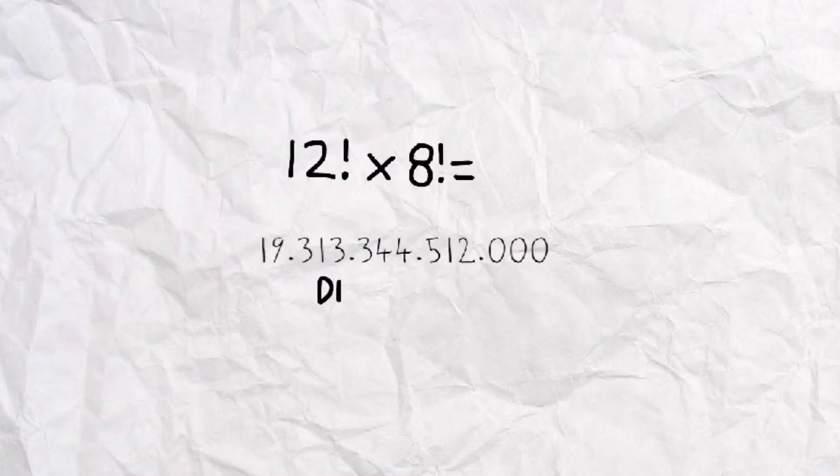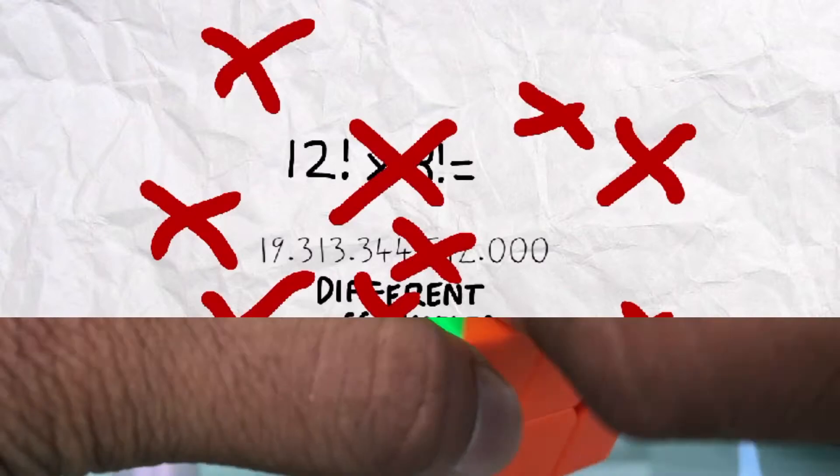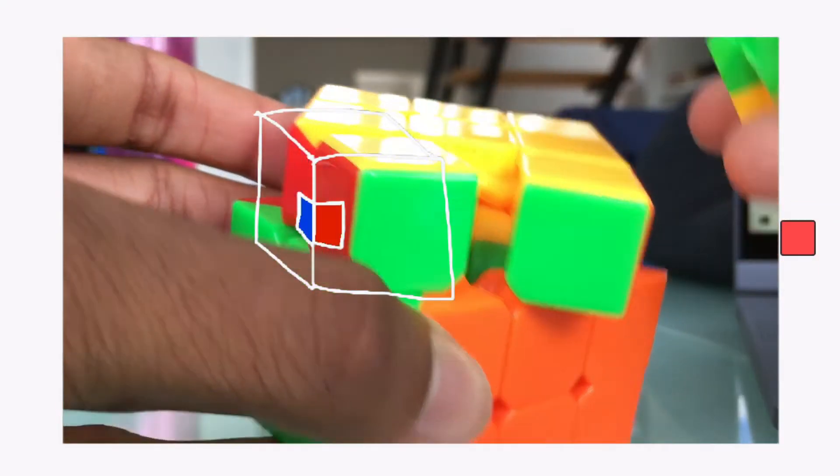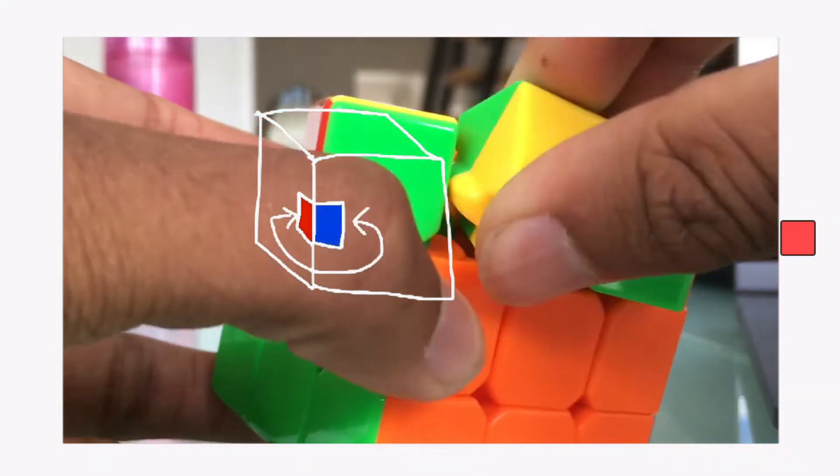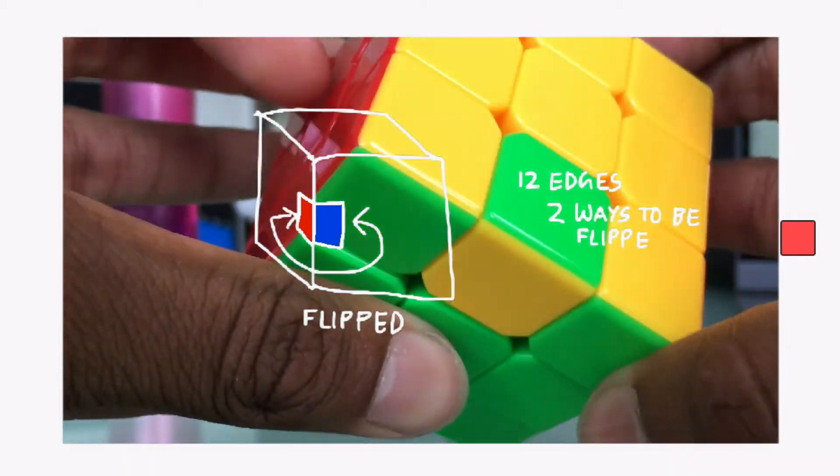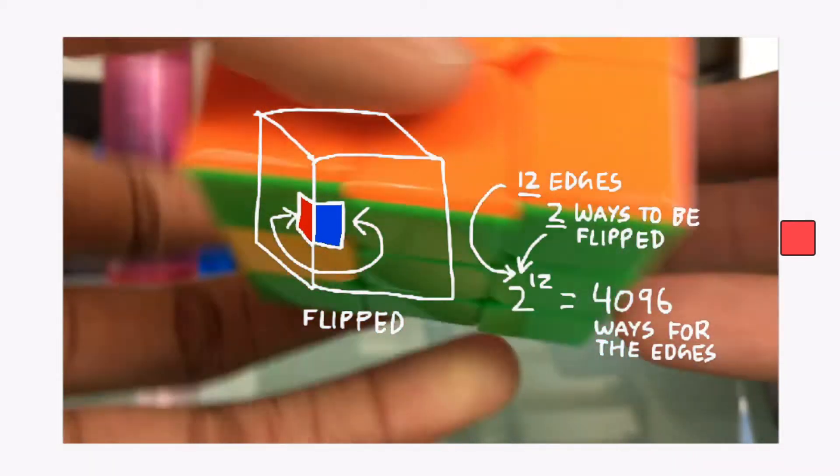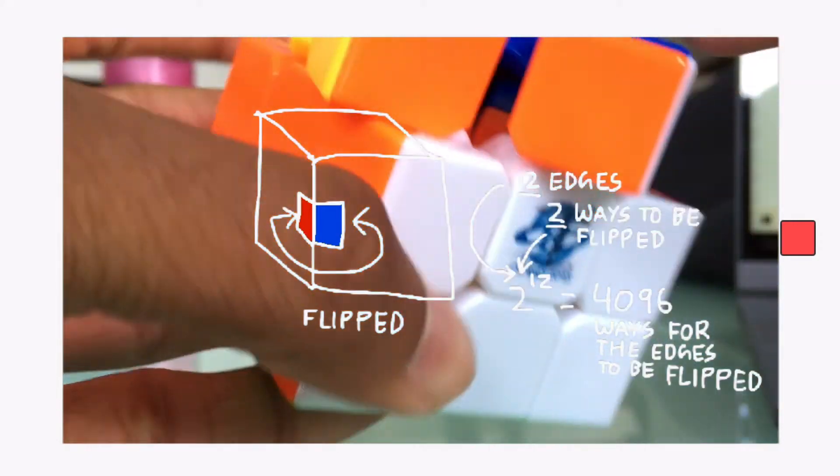By pure logic, one would say that there are 12 factorial times 8 factorial different possible scrambles for the Rubik's Cube. But that's not how it works. We have talked about how each edge can be arranged in 12 different spots, but what we haven't discussed is that they can also be flipped. Each edge can be flipped no matter which position it is in.